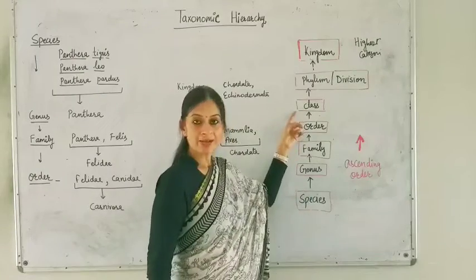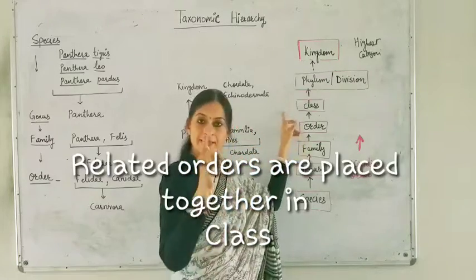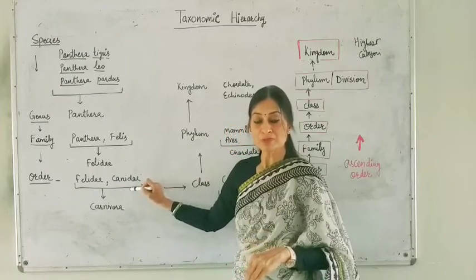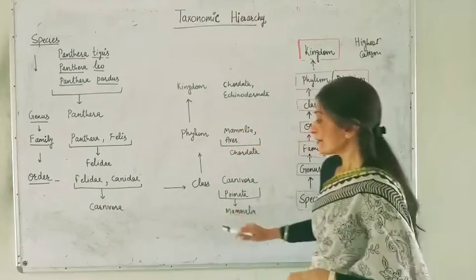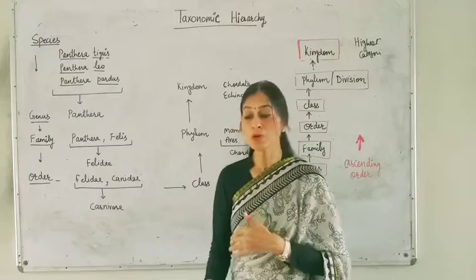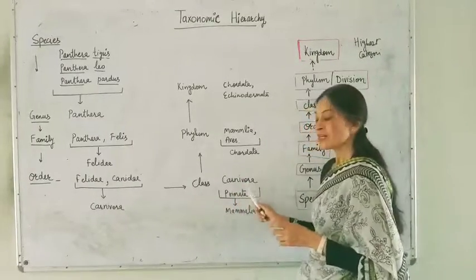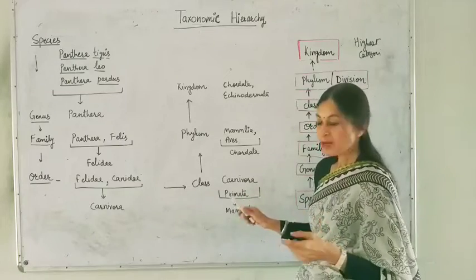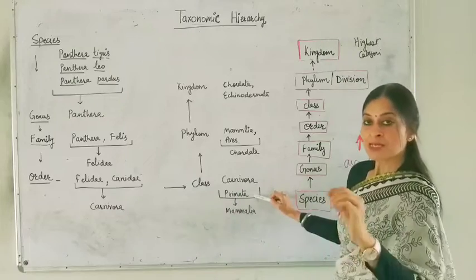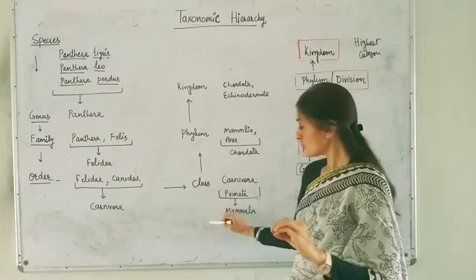Likewise, come to the class. In class, related orders that share common features are placed together. For example, the order Carnivora and the order Primates share some common features. These two orders are related to each other, so they are placed in a common class known as Mammalia.